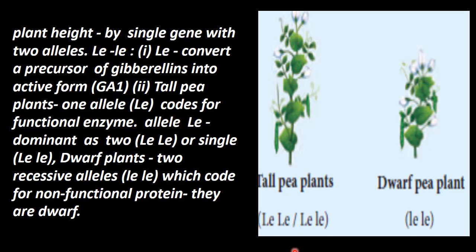So, tall plants have LE/LE or capital LE and small LE, whereas dwarf plants have only recessive LE and LE. This is the molecular reason for conversion of Gibberellin into its active form. The gene would be functional. We have to understand this. Thank you, students. We will meet again in the next class.